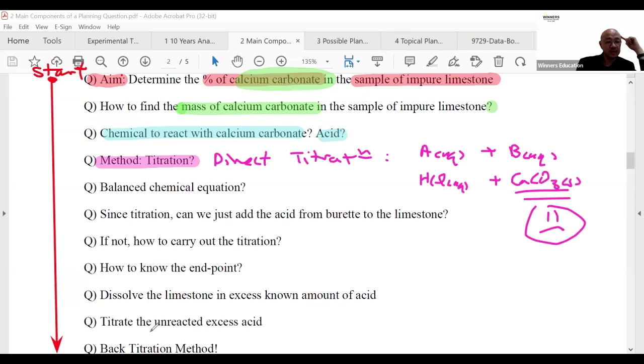I write out my balanced equation - HCl with calcium carbonate. Since it's titration, should we just add acid from the burette to the limestone? No you cannot - how do you find when the indicator changes color? So then how do I carry out the titration? How to know the end point?